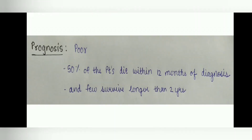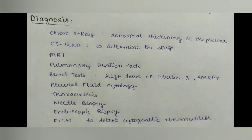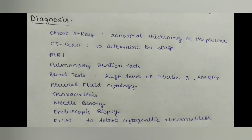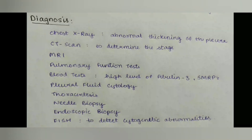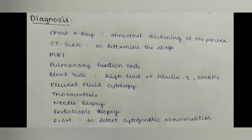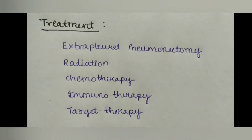For diagnosis, on chest X-ray, abnormal thickening of the pleura can be seen. CT scan can determine the stage of malignant mesothelioma. MRI, pulmonary function tests, and blood tests are also useful. In blood tests, high levels of fibulin-3 and SMRPs are present. Pleural fluid cytology, thoracentesis, needle biopsy, and endoscopic biopsy can also be performed. FISH is a hybridization technique used to detect cytogenetic abnormalities.